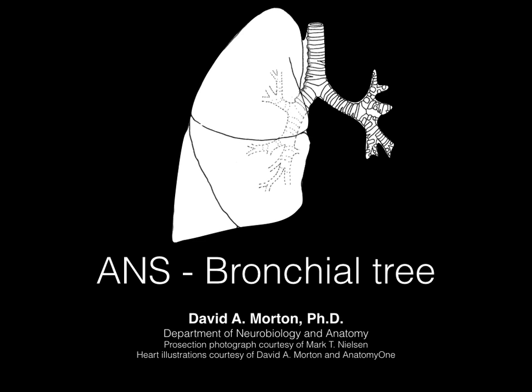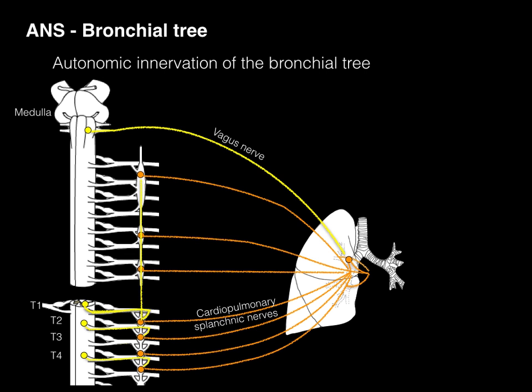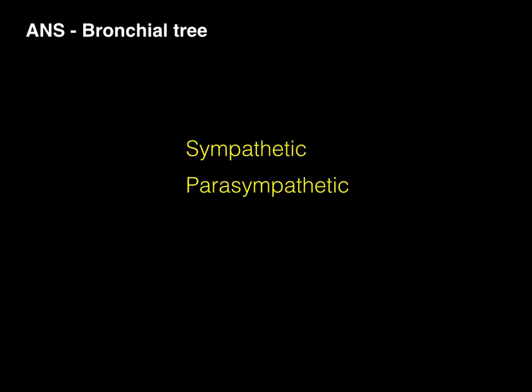We're now going to describe the role the autonomic nervous system has in regulating the bronchial tree in your lungs. We'll discuss the type of neurotransmitters found in the pre- and postganglionic synapses for both sympathetic and parasympathetic nervous system, and the effect that these two parts of the nervous system have on the bronchial tree. Both the vagus nerve and the cardiosplanchnic nerves are the ones that come in control and regulation of the smooth muscle of that bronchial tree.